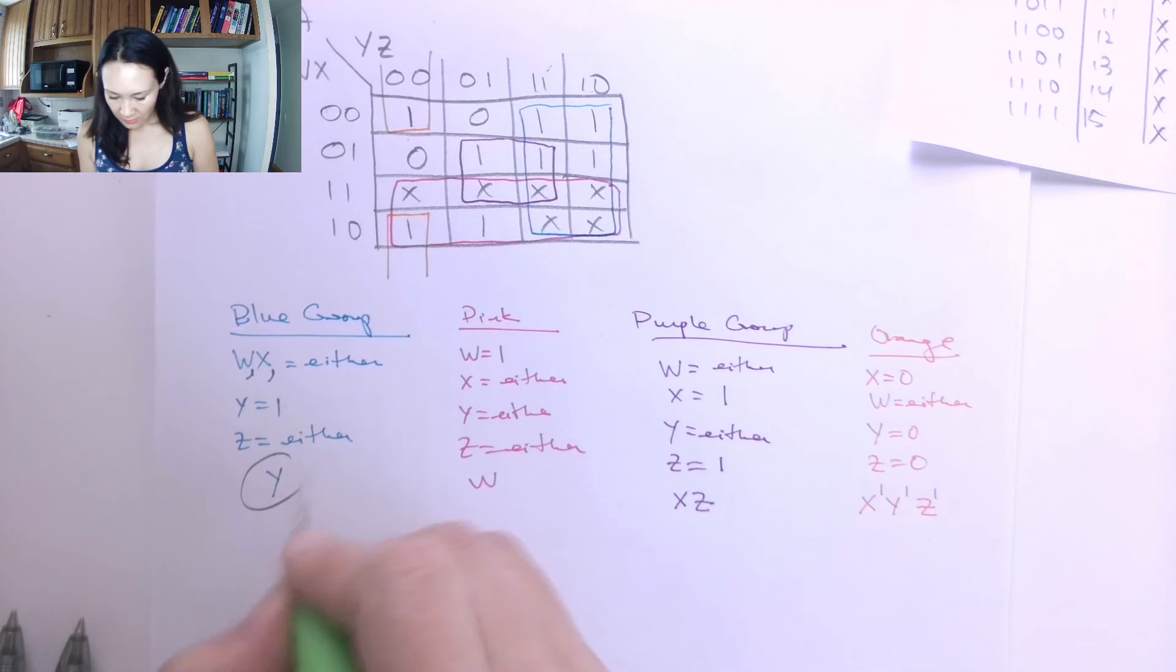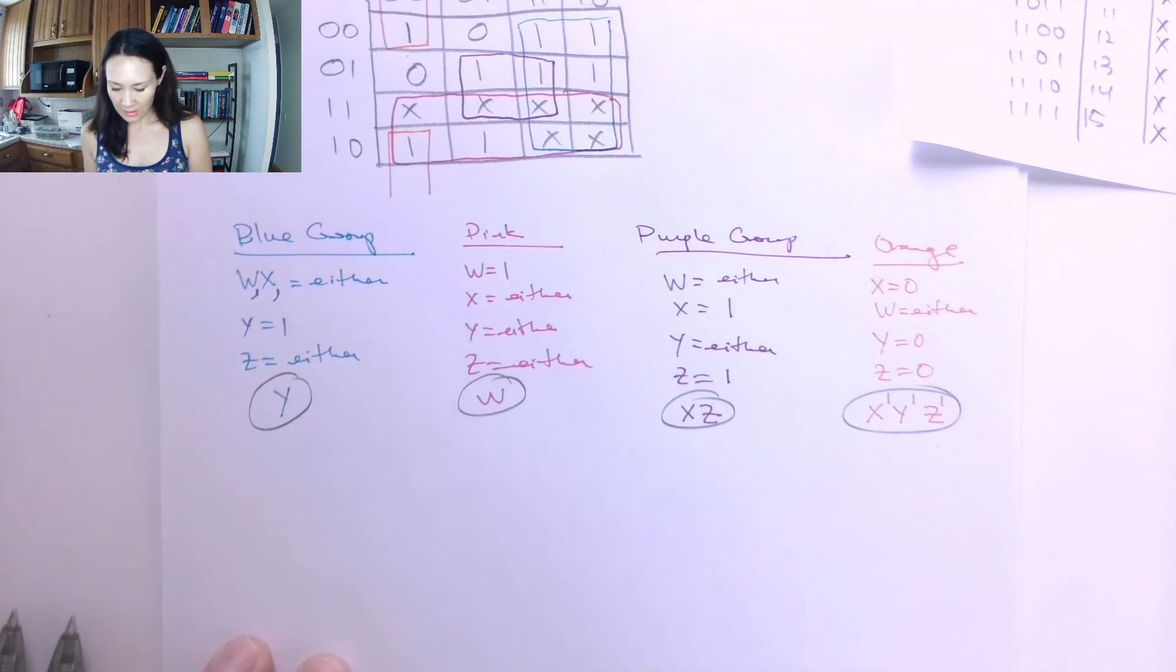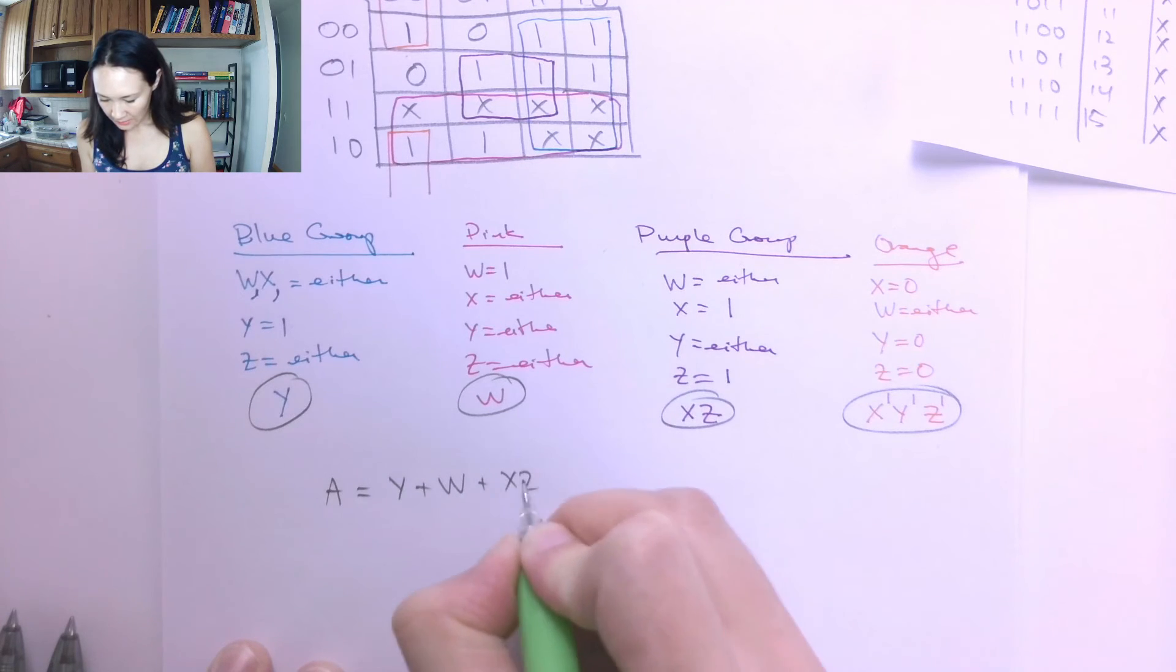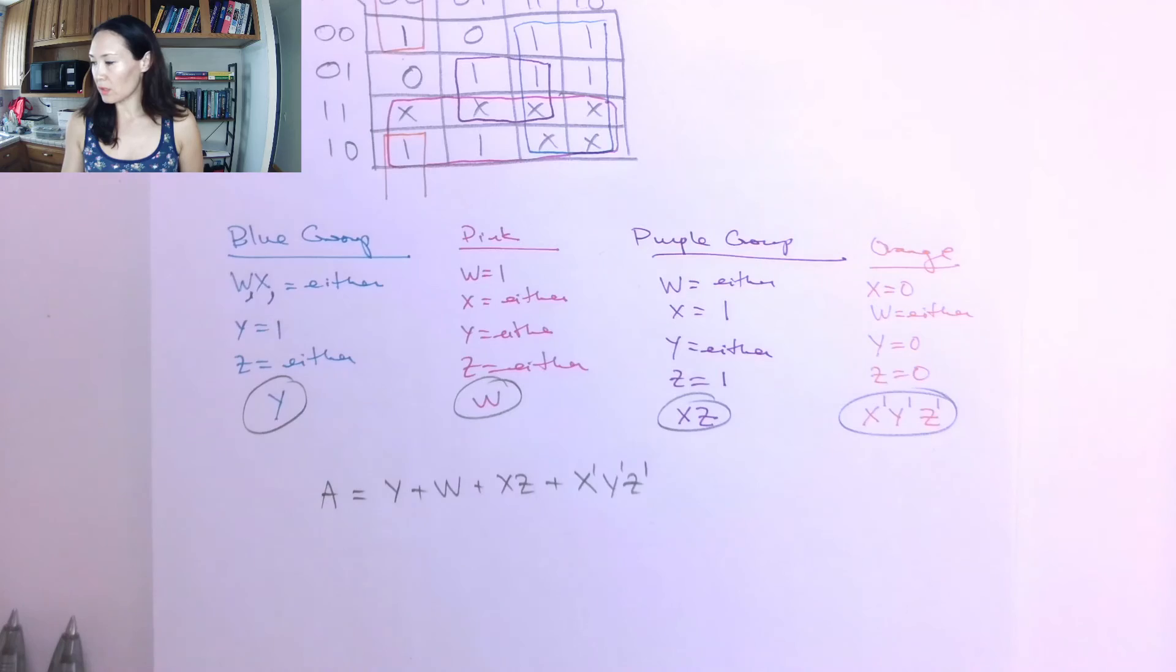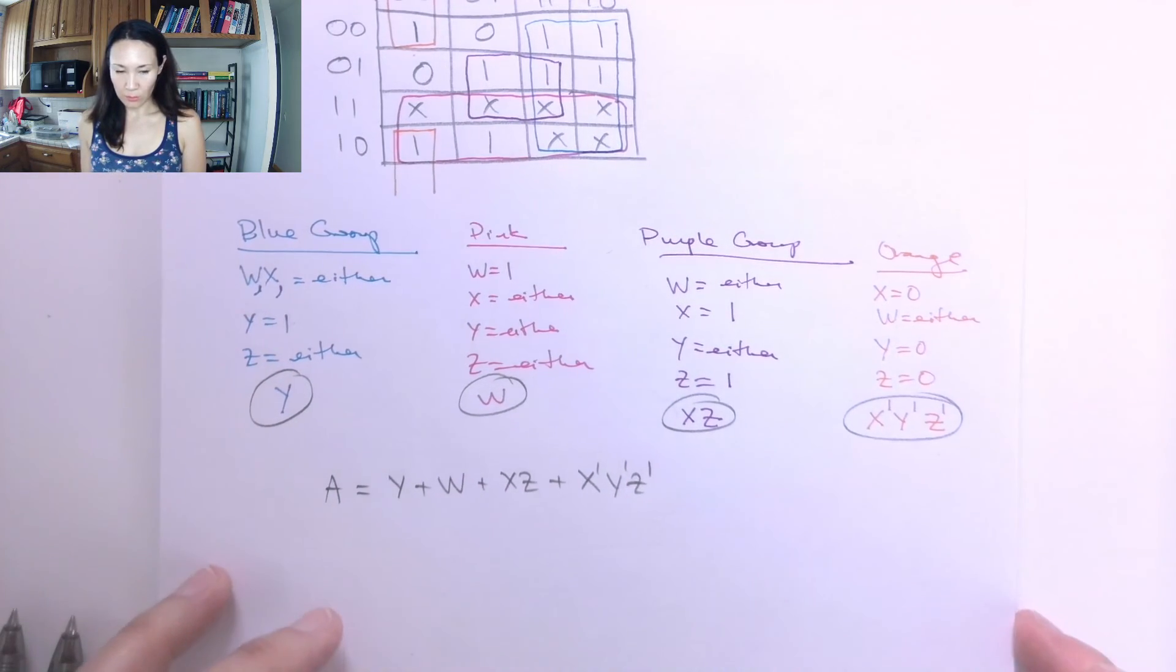So now what we do is we take all these product terms that we got from all of our groupings and we just add them together to get our A output function. So output A is given by Y or W or XZ or X'Y'Z'. And this is simplified. We used our Karnaugh map to simplify this instead of using Boolean algebra.